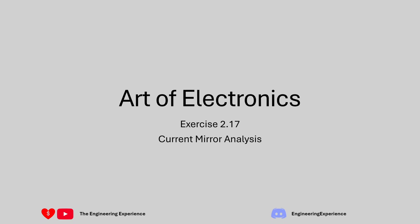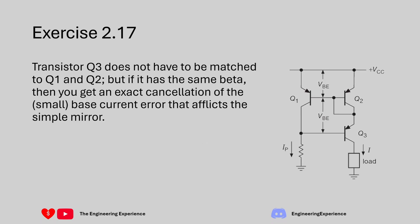Welcome back. In today's video we are going through Exercise 2.17 from The Art of Electronics. We are looking at a current mirror circuit and need to show that a statement is true: transistor Q3 does not have to be matched to Q1 and Q2, but if it has the same beta (current gain), you get an exact cancellation of the small base current error experienced in the simple mirror circuit. Please check out my last video before watching this one.